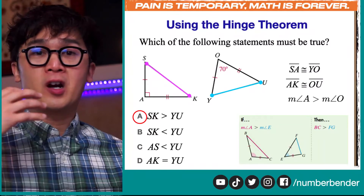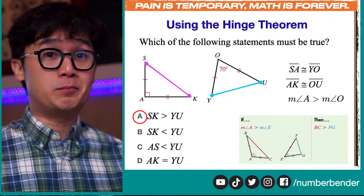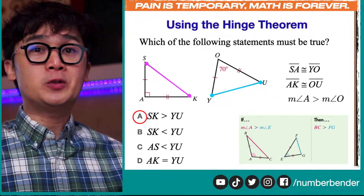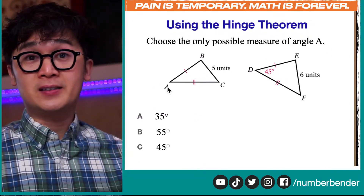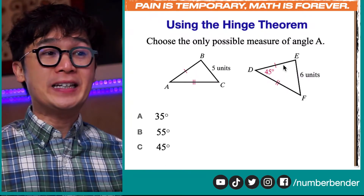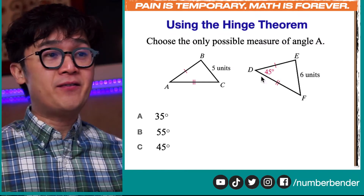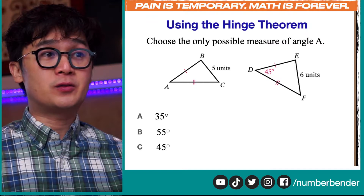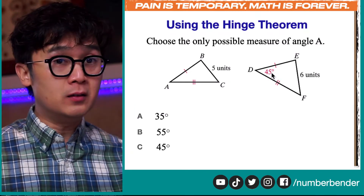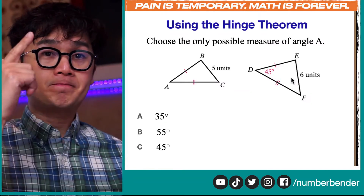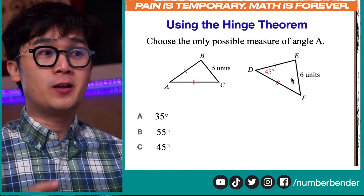If we are familiar with the Hinge Theorem, just by visualizing which third side is bigger or which angle is bigger between the two triangles, we'll be able to use it easily. So if we're going to choose the possible measure of angle A, knowing that AB is congruent to DE and AC is congruent to DF, and we are given the measurement of side EF and side BC as 5 units and 6 units, and angle D is 45 degrees. Using the Hinge Theorem, we know the bigger angle is opposite the longer side, provided the two corresponding parts of the triangles are congruent, which is true here.